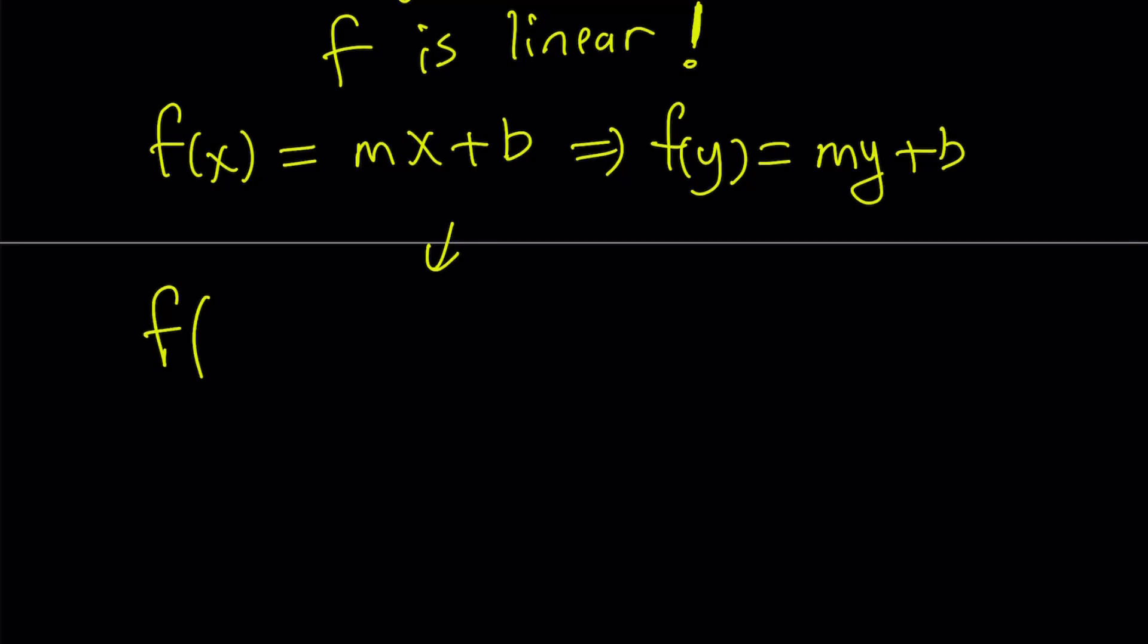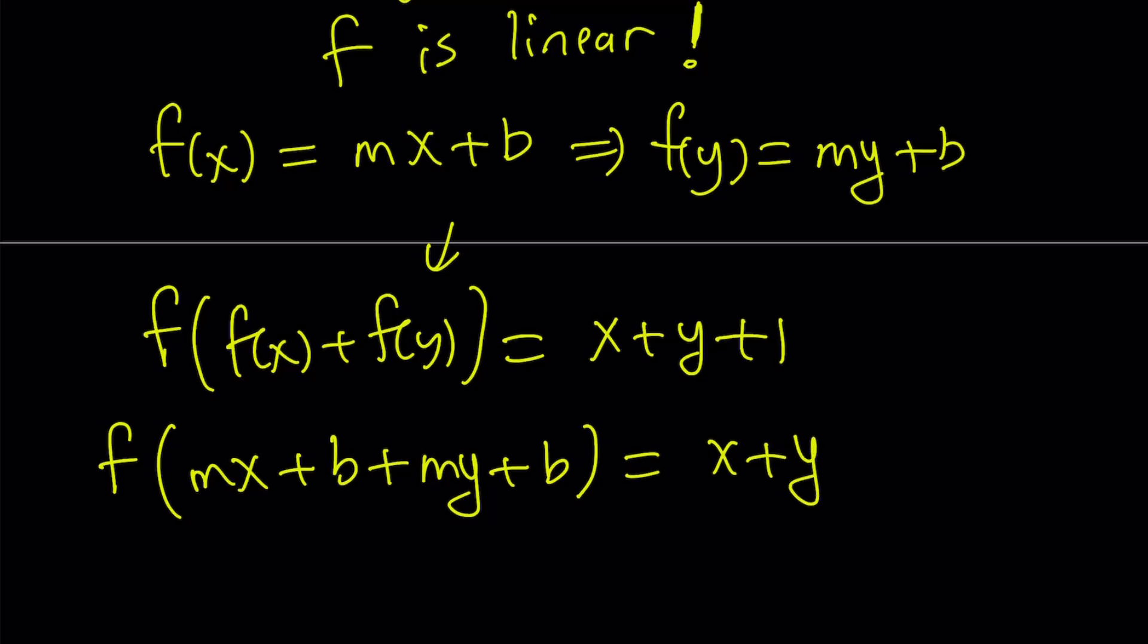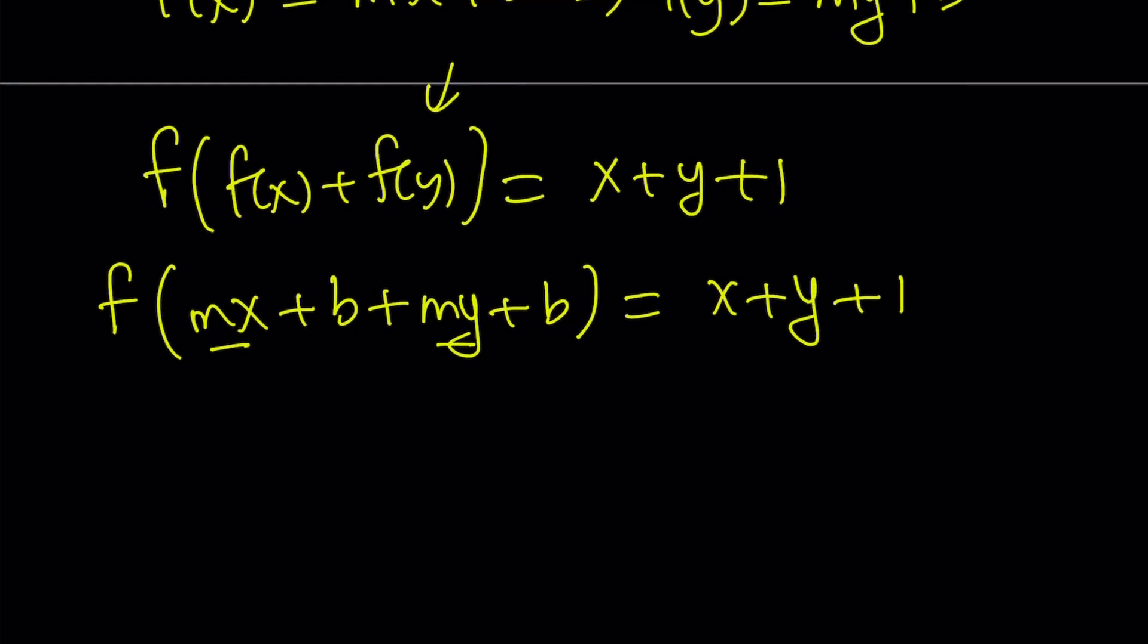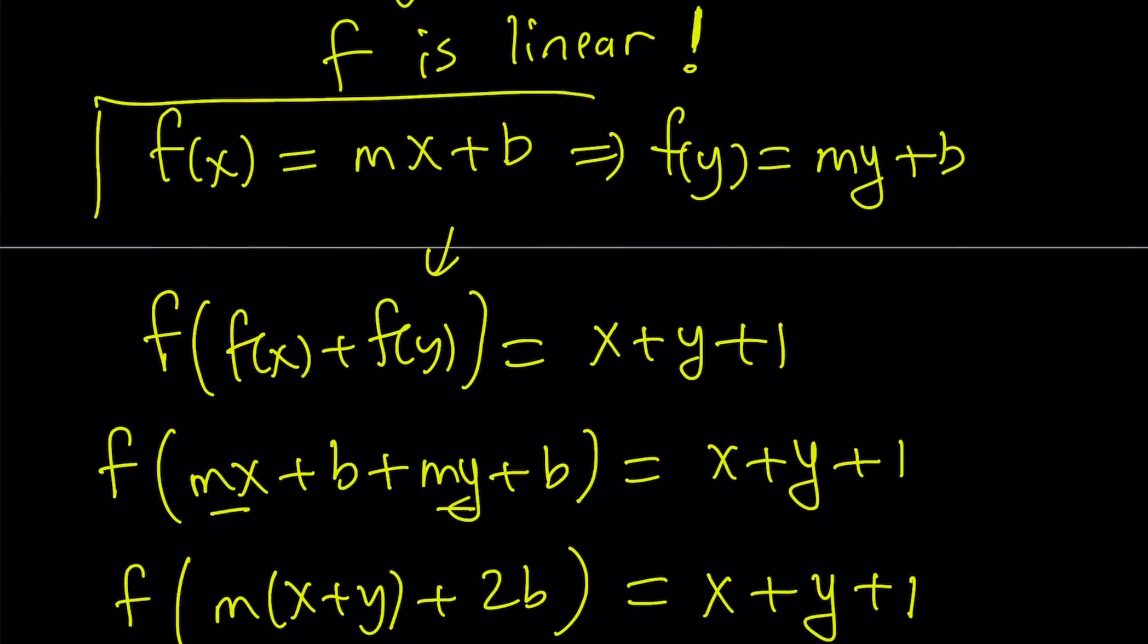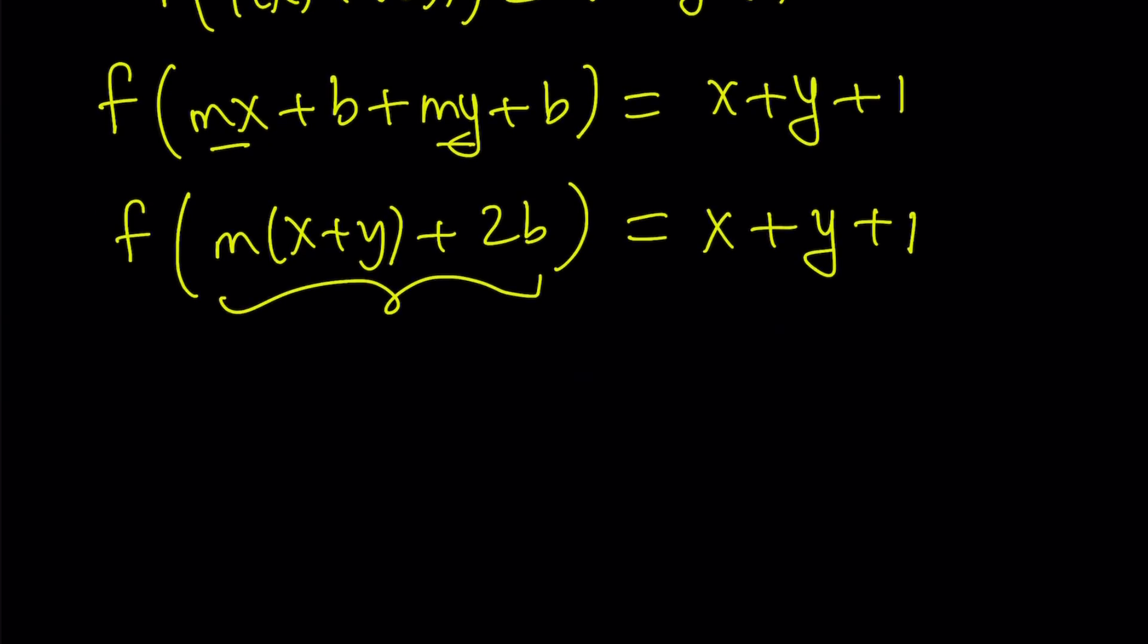Our original problem was f(f(x) + f(y)) = x + y + 1. So if you go ahead and substitute both of these into this equation, you're going to get f(mx + b + my + b) = x + y + 1. And then, I'm going to add these two together, mx + my, and write it as f(m(x + y) + 2b), 2b or not 2b. Okay, that's the problem. Now, using the definition of f again one more time, we said that f is written as mx + b. So multiply the argument by m and add b. So it's m times this quantity plus b = x + y + 1.